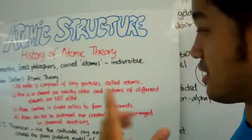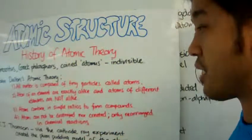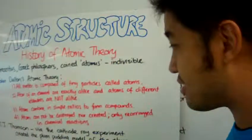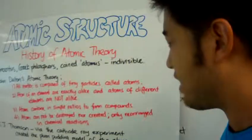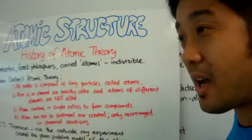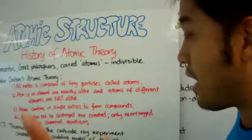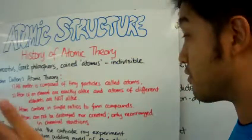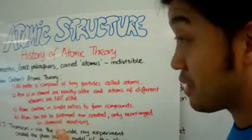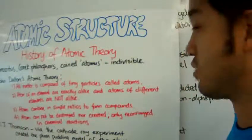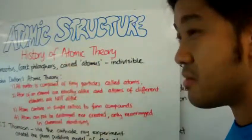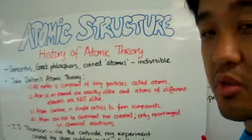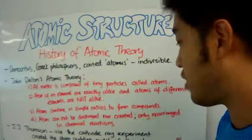But he added stuff like atoms of an element, like atoms of hydrogen, and all atoms of hydrogen are exactly alike. And atoms of different elements are not alike. So atoms of hydrogen will look different than atoms of helium or oxygen, for example. And then he said that atoms combine in very simple ratios to form compounds.